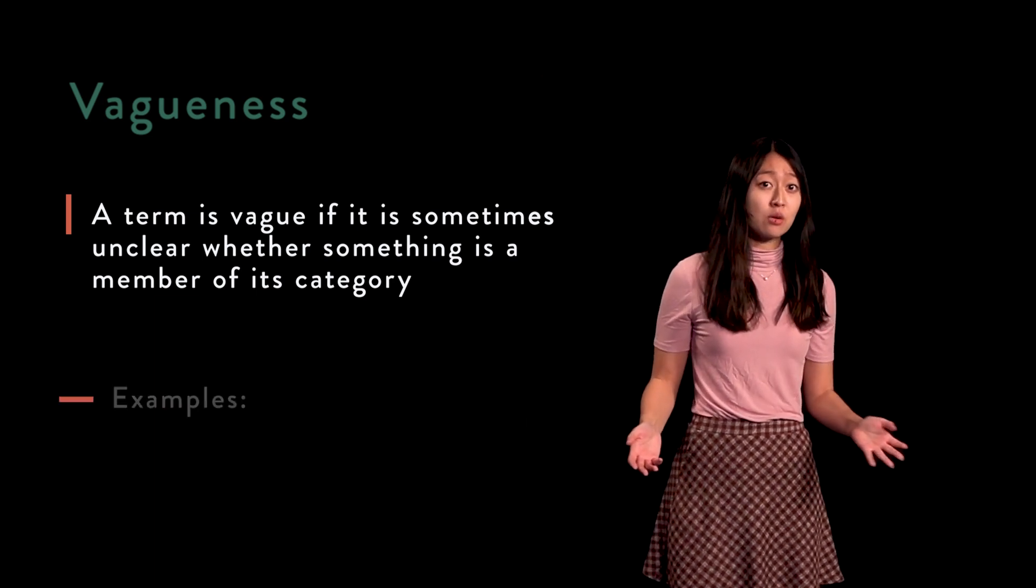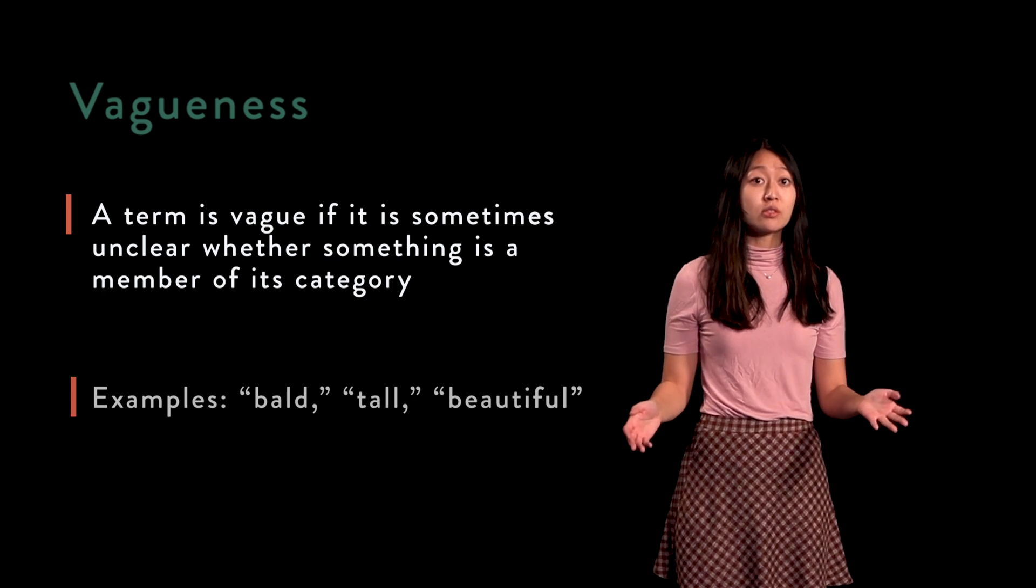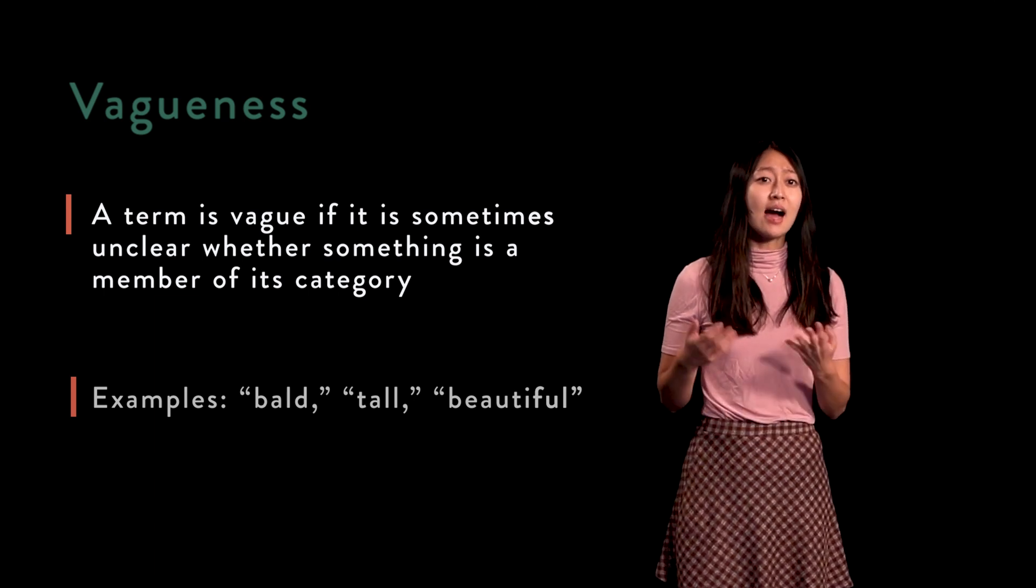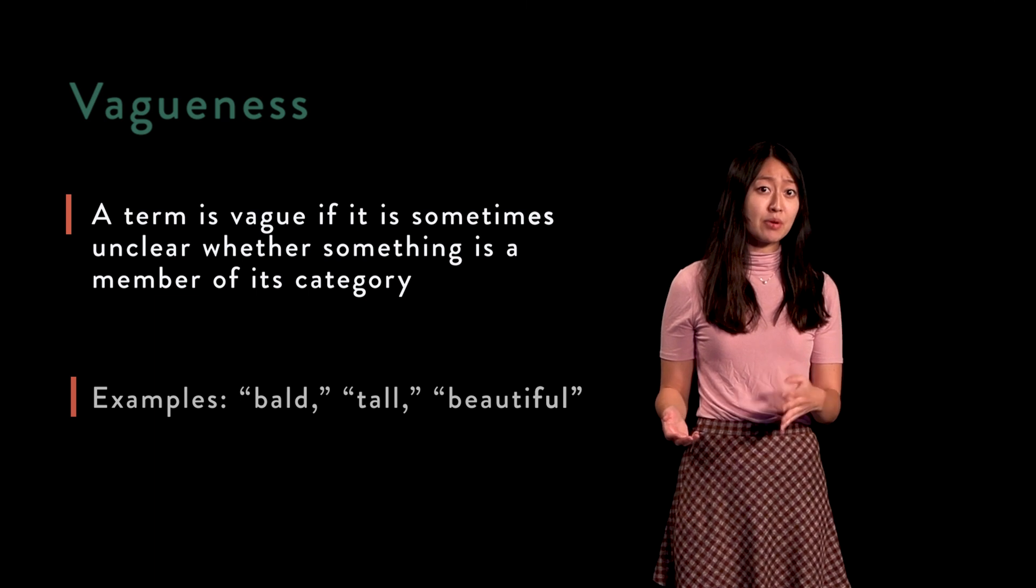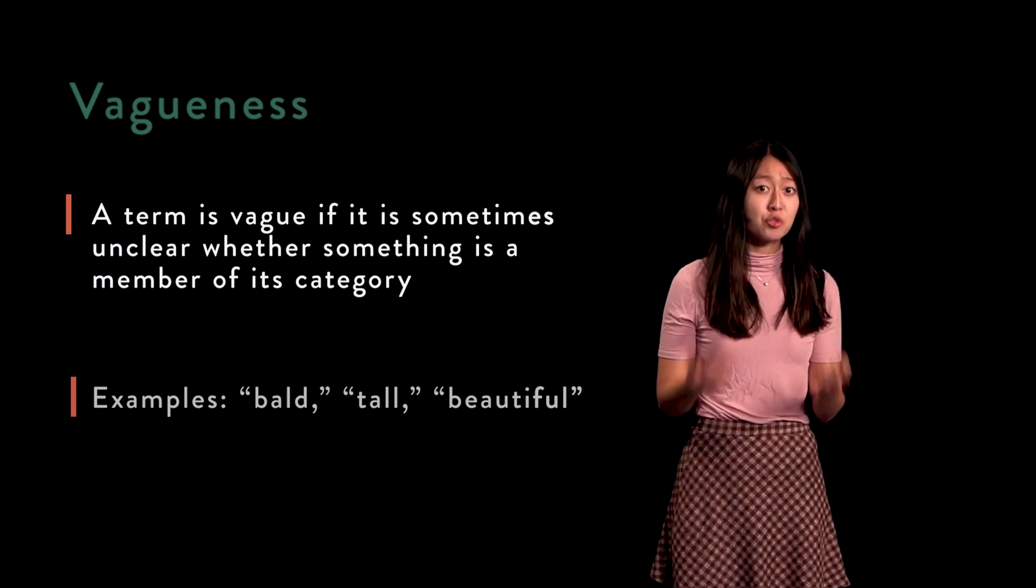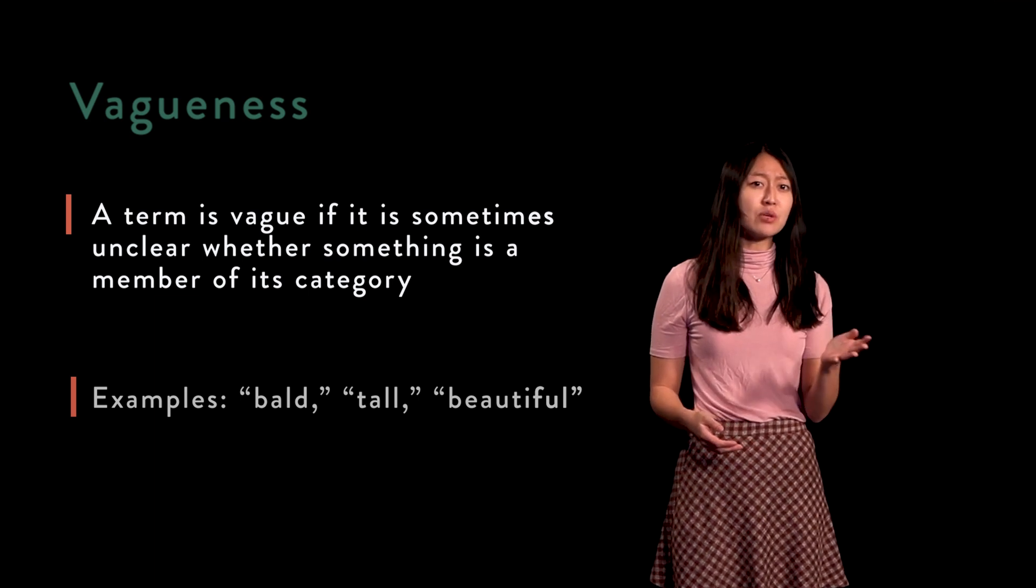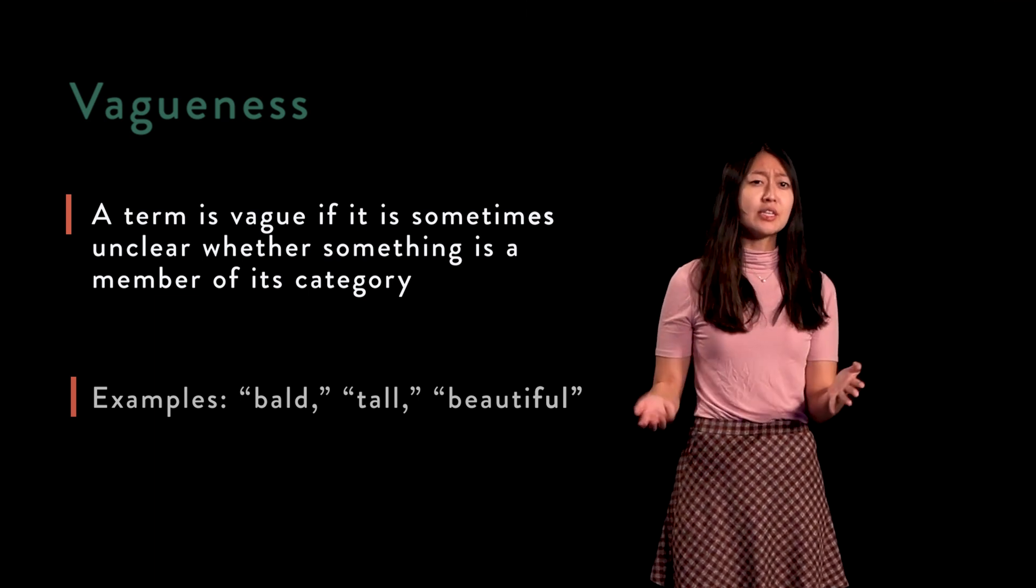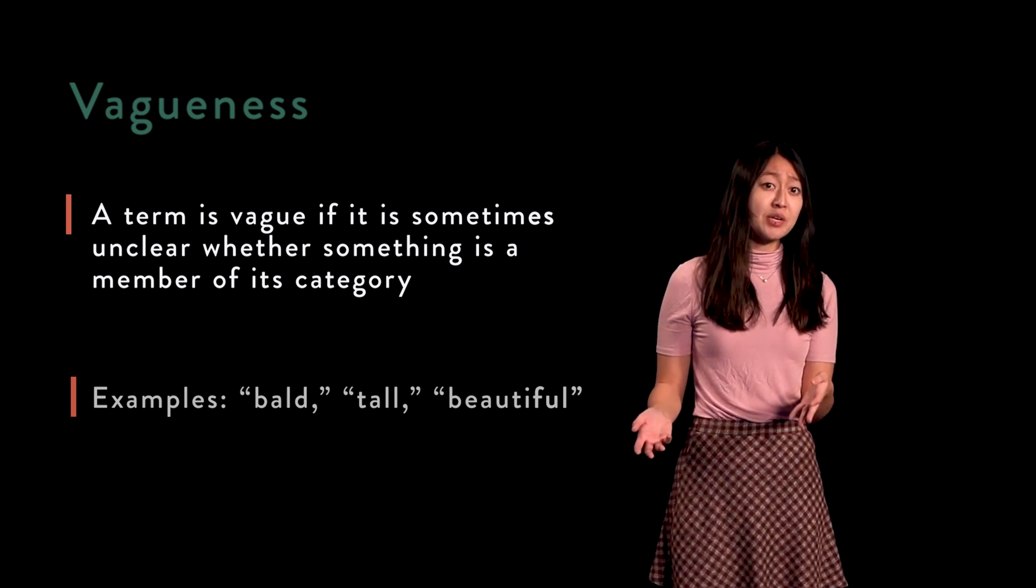Some classic examples are words like bald, short, tall, beautiful, etc. We do not have a precise height after which we consider a person a member of the category tall, and before which we consider them a member of the category short. We do not have a precise number of hairs after which we consider a person not bald and before we consider them bald.